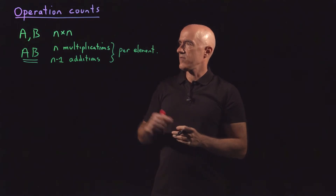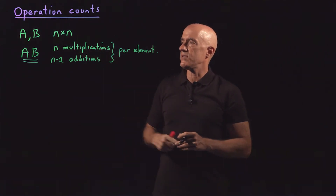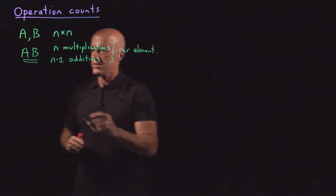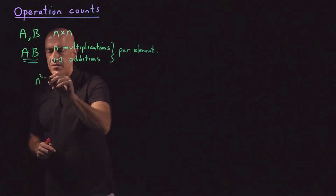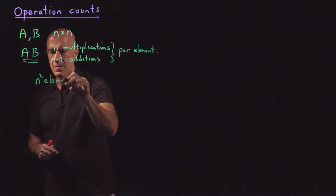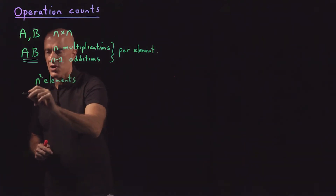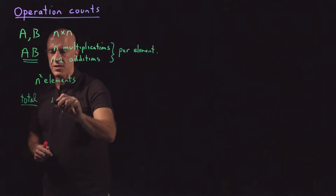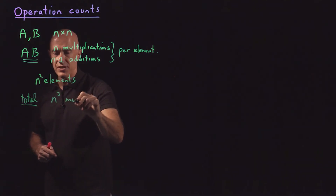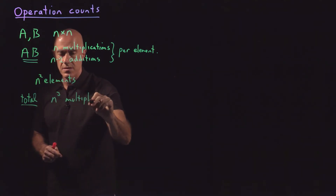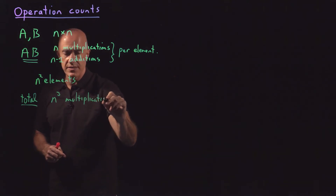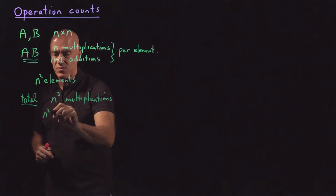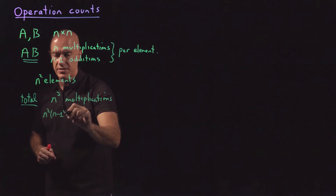How many elements are there? These are n by n matrices, so there are n squared elements. The total will be n cubed multiplications to multiply two matrices A and B, and n squared times n minus 1 additions.